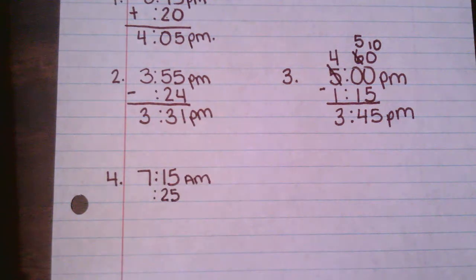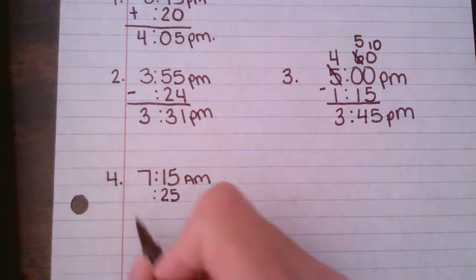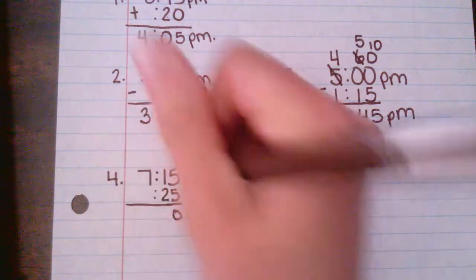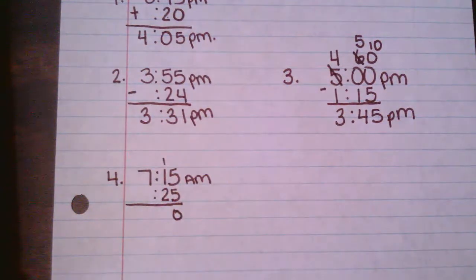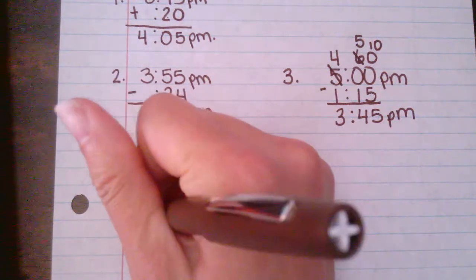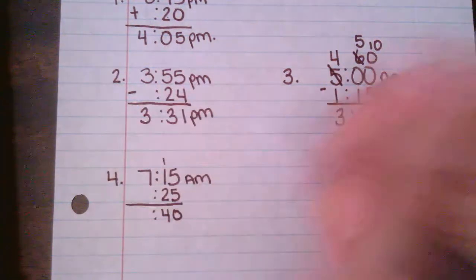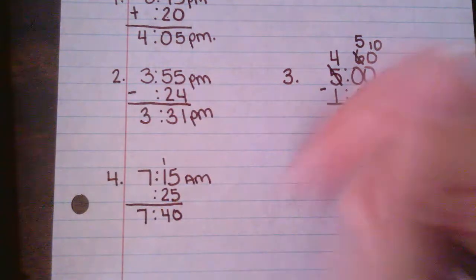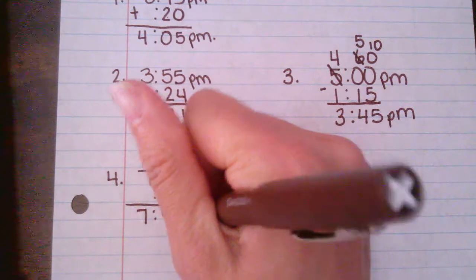5 plus 5 is 10. 1 plus 1 plus 2 is 4. 7 plus nothing is 7. So he arrived at work at 7:40 a.m.